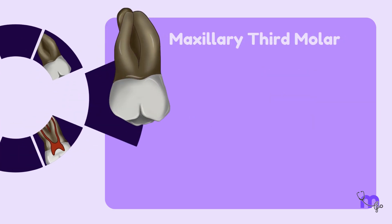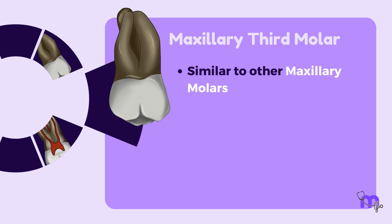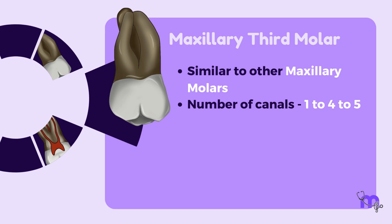Maxillary third molar: similar to both the other maxillary molars in having three roots; canals vary from one to four to five in number depending on the root; access cavity is triangular.